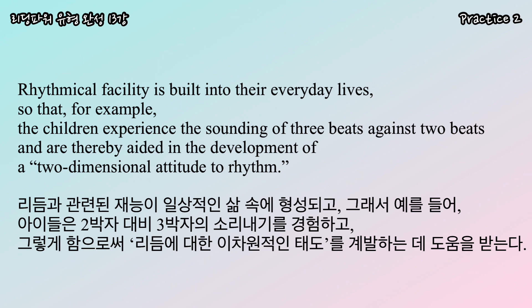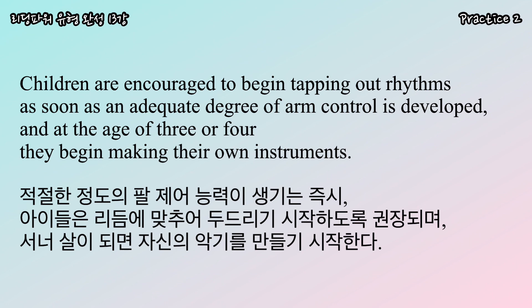Rhythmical facility is built into their everyday lives so that, for example, the children experience the sounding of three beats against two beats and are thereby aided in the development of a two-dimensional attitude to rhythm. Children are encouraged to begin tapping out rhythms as soon as an adequate degree of arm control is developed, and at the age of three or four, they begin making their own instruments.